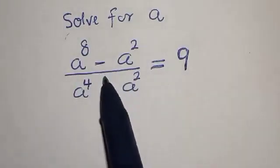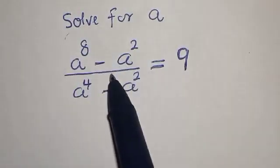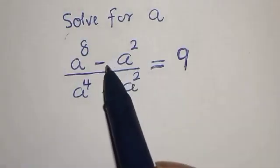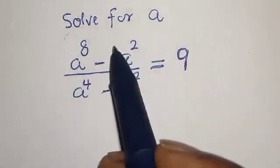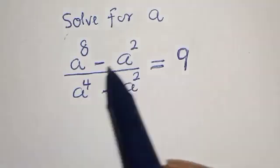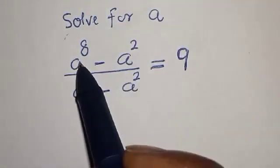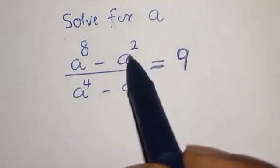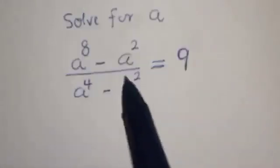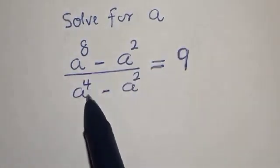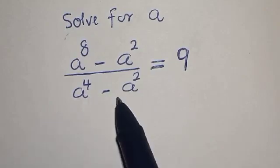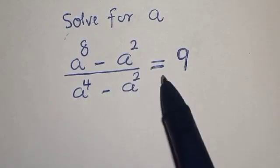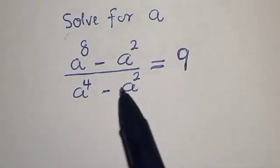Hello, welcome to Magist. In this class, we want to look at how we can quickly solve for a from this given equation: a raised to power 8 minus a squared, divided by a raised to power 4 minus a squared, is equal to 9.